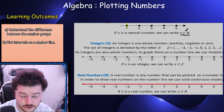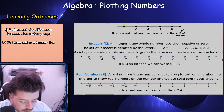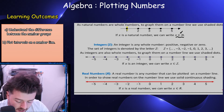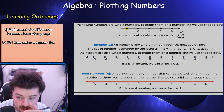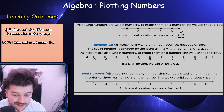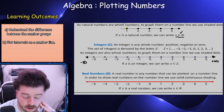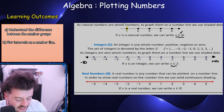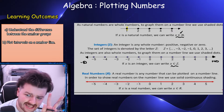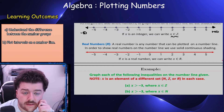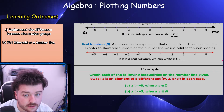So integers are whole positive and negative numbers including zero: minus five, four, three, two, one, and so on. We plot them the same way on the number line, but now with arrows on both sides to indicate we're going to minus infinity and plus infinity. If x is an integer we write it as x is an element of Z.